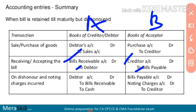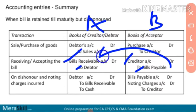In the books of B, this bill is called Bills Payable, and in the books of A it is called Bills Receivable. The bill receivable is given to the debtor in A's books, and Bills Payable is recorded in B's books. This bill receivable is recorded as a bills receivable in A's books.